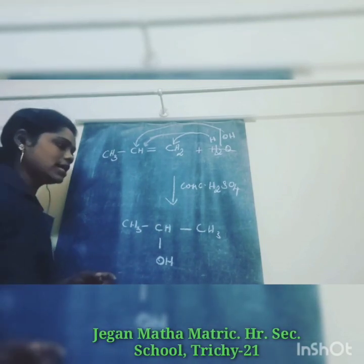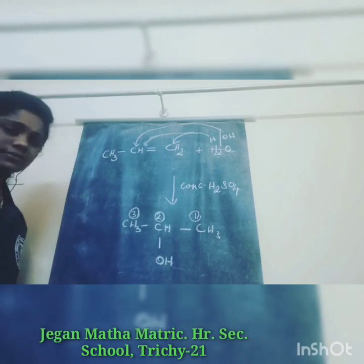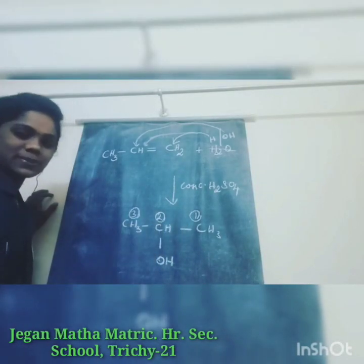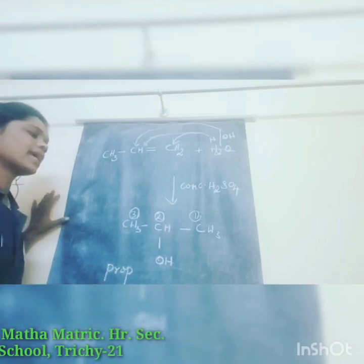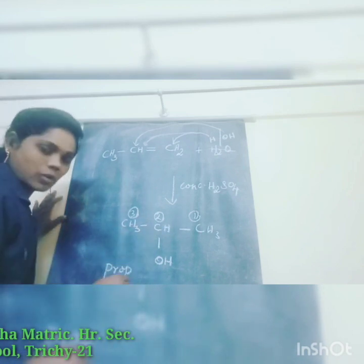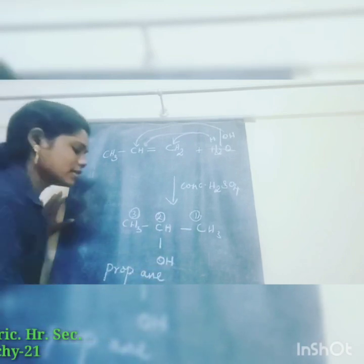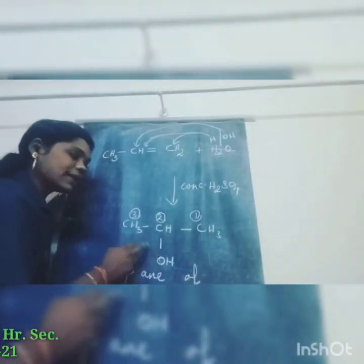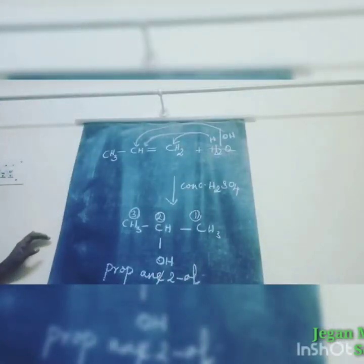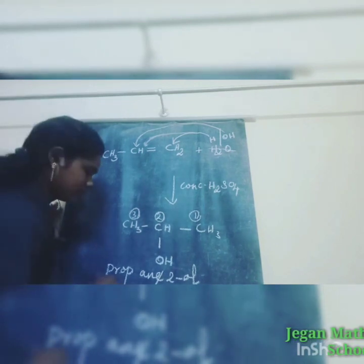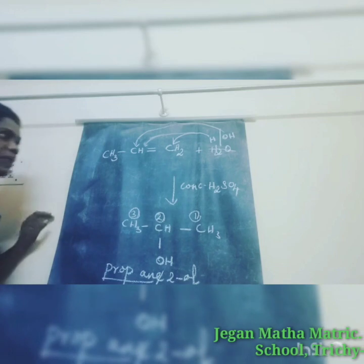Now we write the IUPAC name. Totally 3 carbons are present, so the root word is prop. Everything is single bond, so primary suffix is 'ane'. Secondary suffix: OH is the functional group, and OH is substituted on the second carbon, so we take 2-ol. Remove the 'e' and add '2-ol'. The IUPAC name is propan-2-ol.